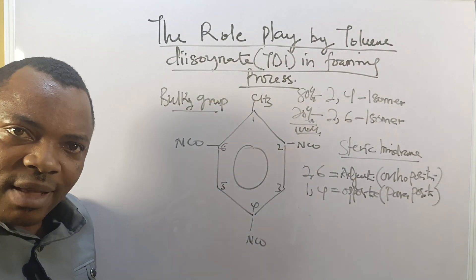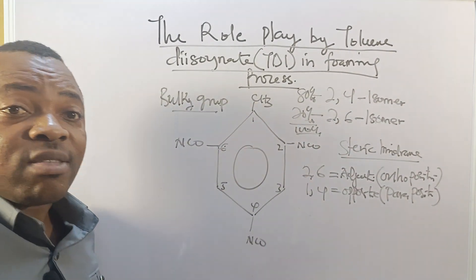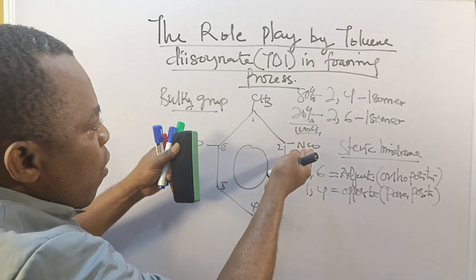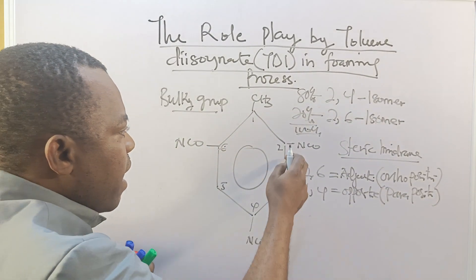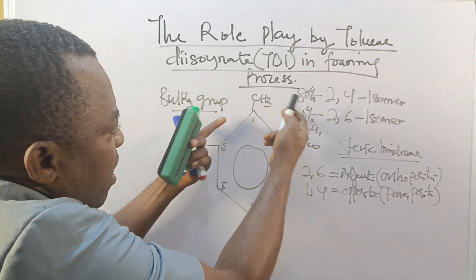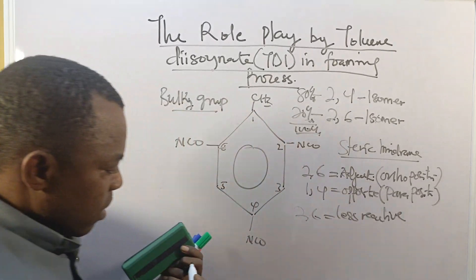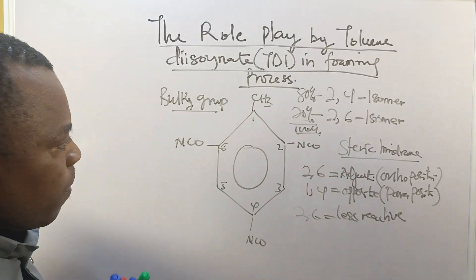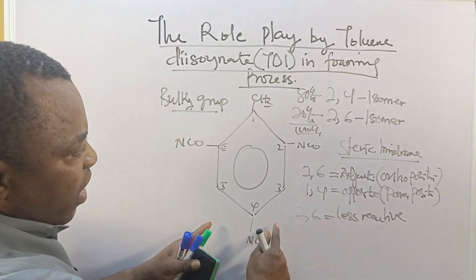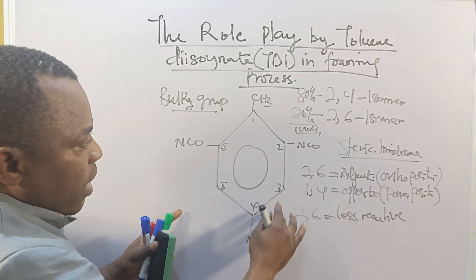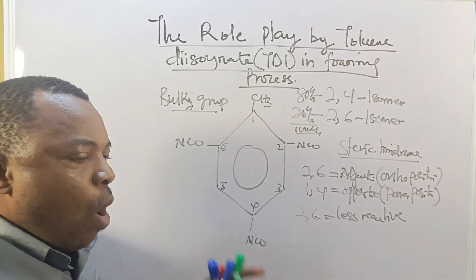The effect of reactivity is related to the position of the isocyanate group attached to the benzene ring. The benzene ring and the methyl group carry what is known as a bulky group. For the 2,6 isomer, the adjacent atoms undergo high steric effects — there is crowding — which prevents other molecules from reacting easily. So the 2,6 isomer is less reactive. For the 2,4 isomer, the isocyanate group at position four is far from the bulky group, resulting in less steric effect, making it more reactive.